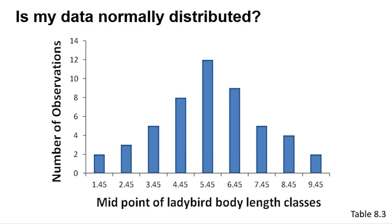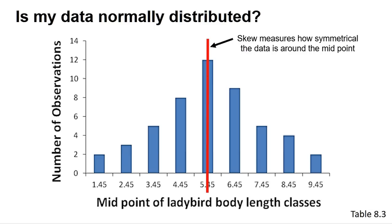Fortunately, there are a couple of other indicators we can assess. Normal data sets are symmetrical, so we can look at the skew value, which should be 0 for a perfectly symmetrical data set. This is also why we find the mean and median are the same in normally distributed data. In general, a skew value between minus 2 and 2 can be consistent with a normal distribution.